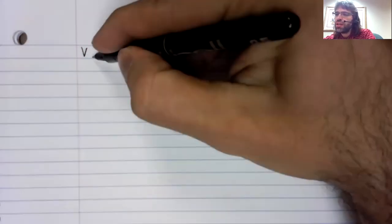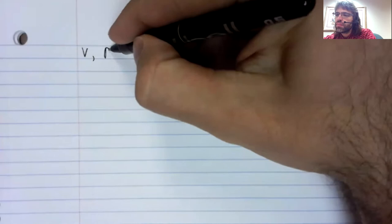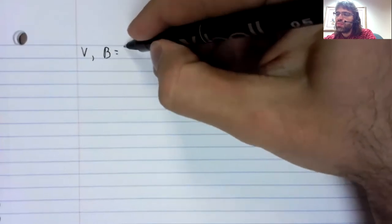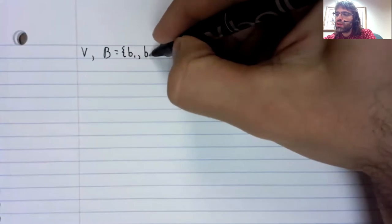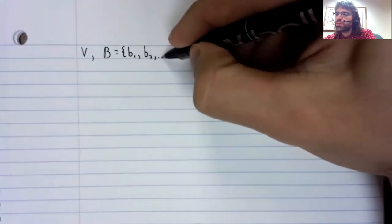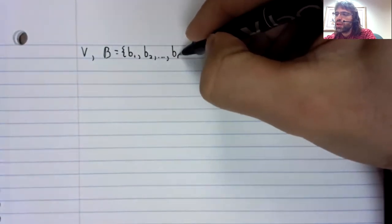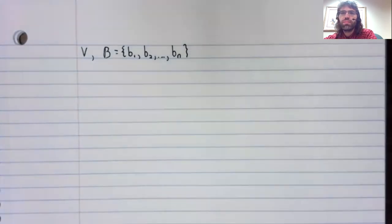Let's say we have a vector space V and a basis B: B1, B2, up to Bn.